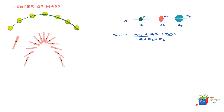For n number of masses, the x-coordinate of the center of mass equals the summation of m_i·x_i divided by the total mass M — where M equals m1 plus m2 plus m3, up to mn, and i runs from 1 to n. This is often written as (1/M) times the sigma summation of m_i·x_i, as i changes from the first mass to the nth mass.